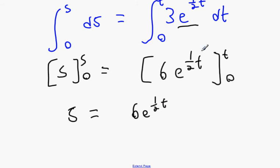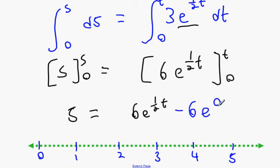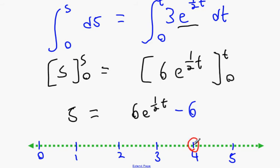It wants the distance described in the fifth second. The time intervals are: 0 to 1 is the first second, 1 to 2 the second, 2 to 3 the third, 3 to 4 the fourth. So 6e^(t/2) with the constant — e to the power of 0 is 1, so S equals 6e^(t/2) minus 6. Now this is our formula. If we find the distance covered after 4 seconds and after 5 seconds, and take both answers away from each other, we find the distance in the fifth second.